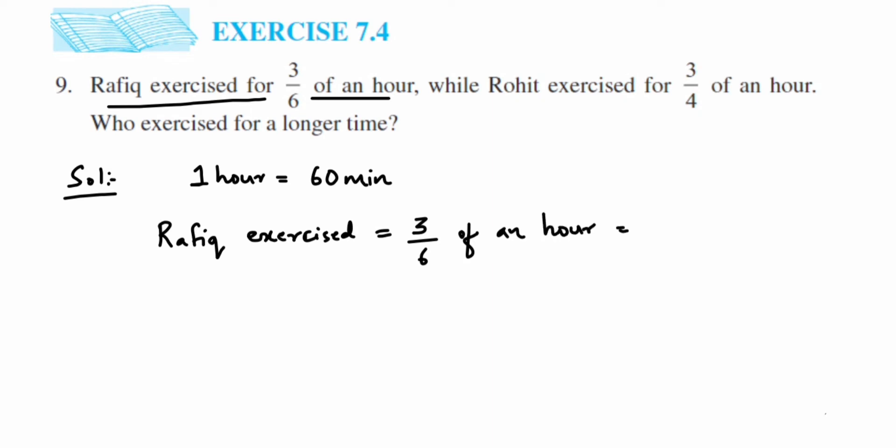In place of 'of' we're going to put multiplication sign. So 3 upon 6 multiplied by 60 minutes. Cancel 6 and 60 to get 10, multiply 3 into 10 is 30. So we'll get 30 minutes.